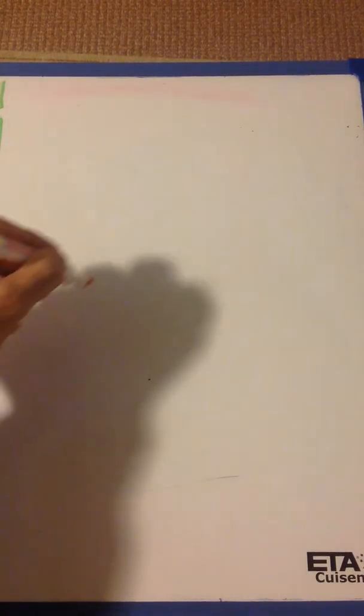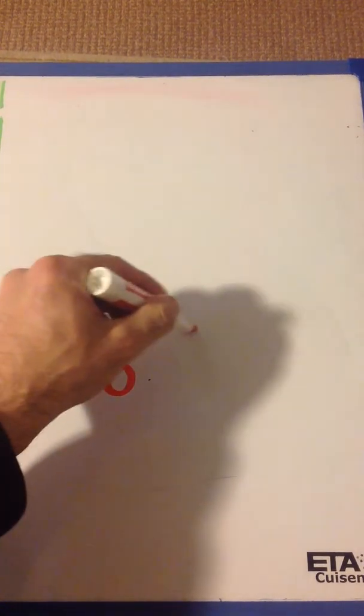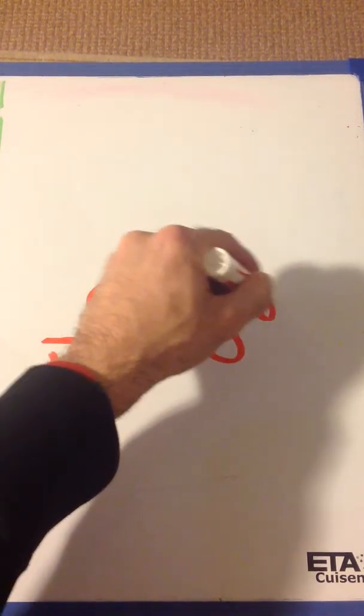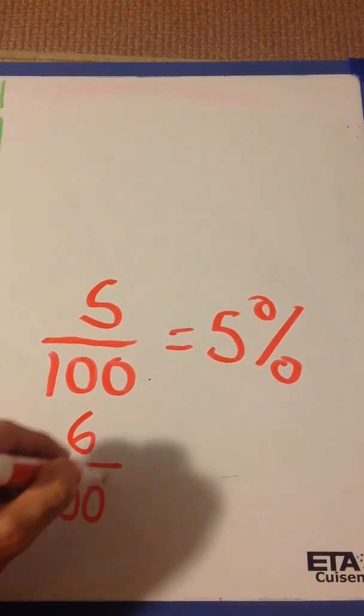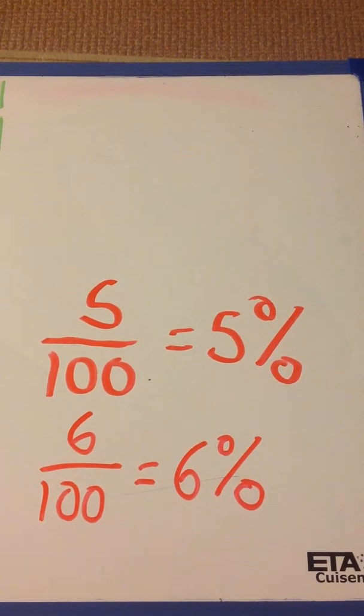Right? So if we had, for example, 5 over 100, we already know the percent. It's 5%. 5 over 100 is 5%. If I had 6 over 100, I'd have 6%. So that's what fractions are.